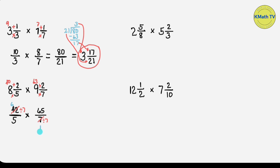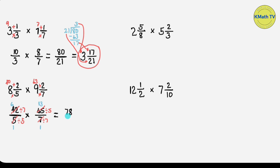Now look at the denominator 5 and the numerator 65. We can also cancel them because 65 is divisible by 5. The GCF of 5 and 65 is 5, so we divide them by 5: 5 divided by 5 equals 1, and 65 divided by 5 equals 13. We're done with the cancellation process. Now let's multiply: 6 times 13 equals 78. Multiply the denominators: 1 times 1 equals 1. The answer is 78 over 1.